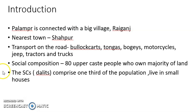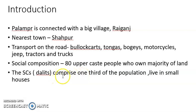The social composition of the village includes 80 upper caste people who have their own land. Palampur also has high caste people who own land, whereas there are scheduled castes and scheduled tribes who comprise one third of the population and live in small houses.